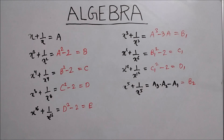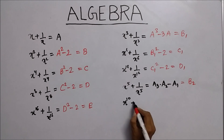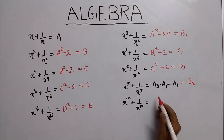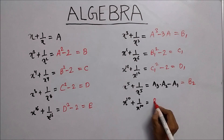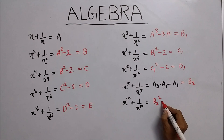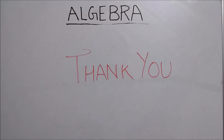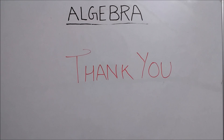To find x to the power 10 plus 1 upon x to the power 10, the value is b2 squared minus 2, and similarly it goes on. Please watch our algebra part 2 video to see how to implement these formulas. Thank you for watching this video. Please subscribe.